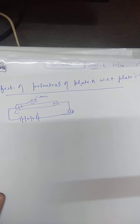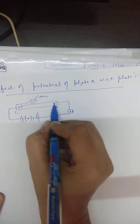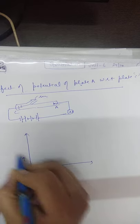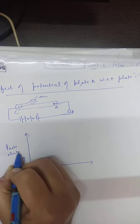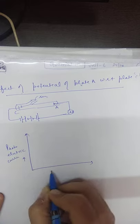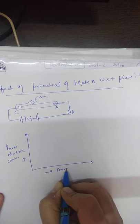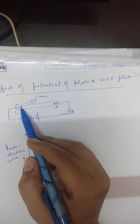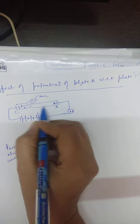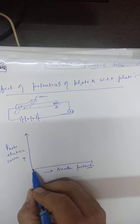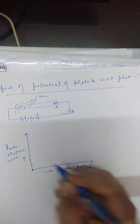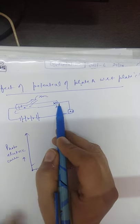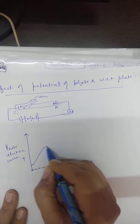If you change the potential of plate A — this is the anode — you change it. What is the effect on photoelectric current versus anode potential? Electrons are ejected when light of suitable frequency is incident on it. These electrons move toward the anode due to its positive potential. Initially, when the potential is small, there is very small current. But as you increase the anode potential — say 20 V, 40 V, 60 V — the current slightly increases, then becomes constant.